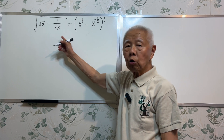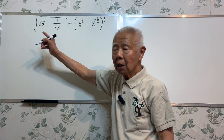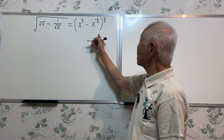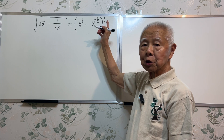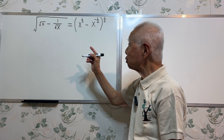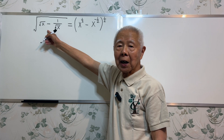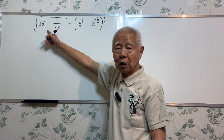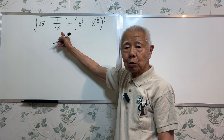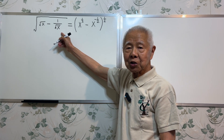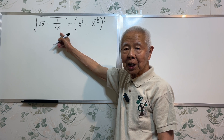The whole thing is underneath a square root. Therefore, I write bracket goes to the exponent one-half. Square root x can be written as x to the exponent one-half. 1 over square root x can be written as x to the exponent negative one-half.